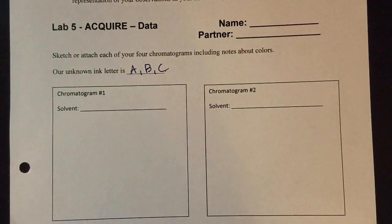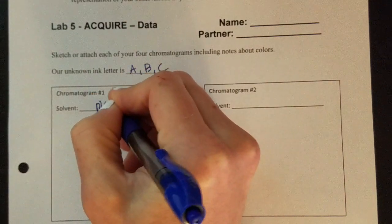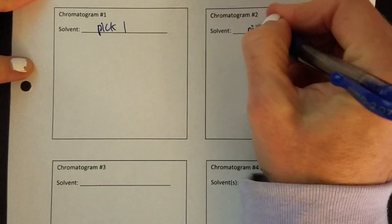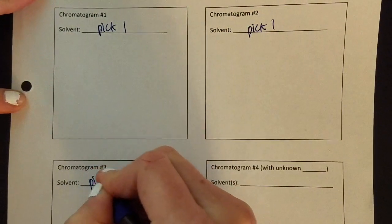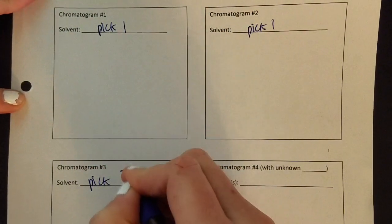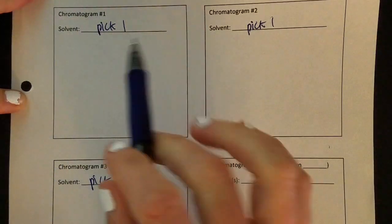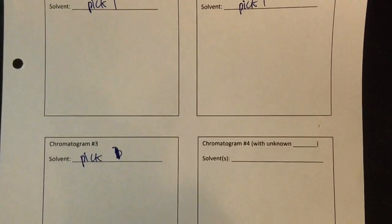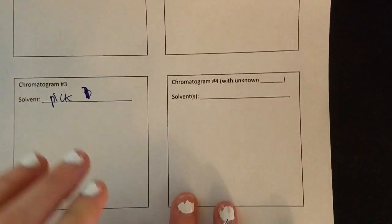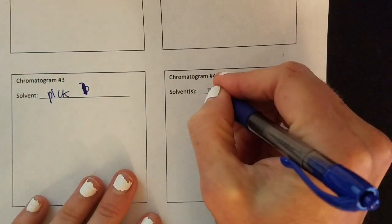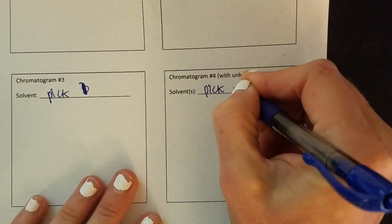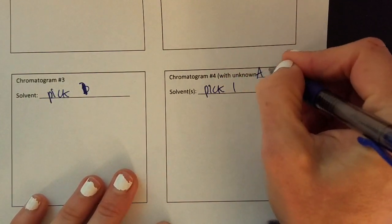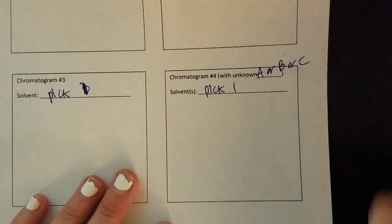For these, just pick one solvent here. Maybe one that's interesting. Pick a second solvent here. Pick a third solvent here. Not three, but one. So out of the six solvents, you'll draw three. That'll be in steps one through four. And then chromatogram four for the unknown, you will have three of them. But just pick one of the unknowns. So show A or B or C.